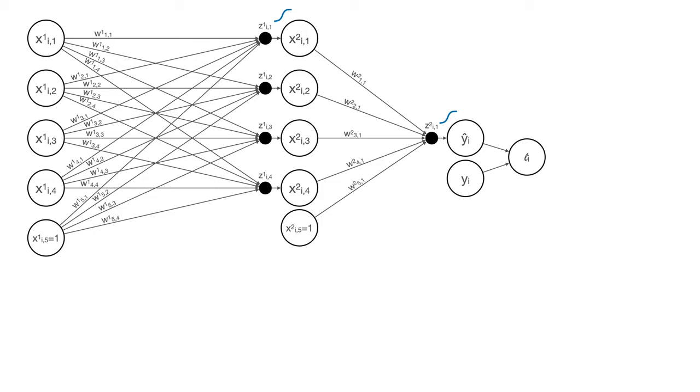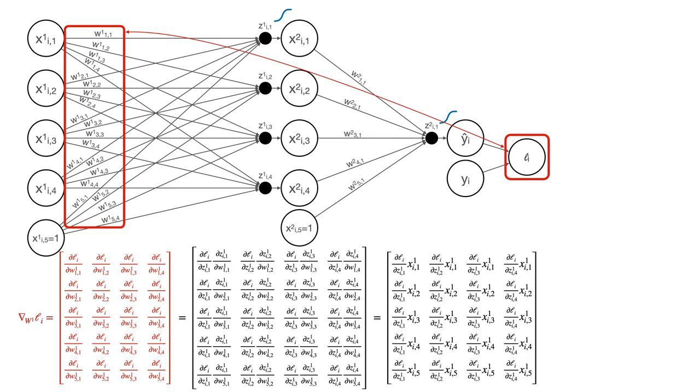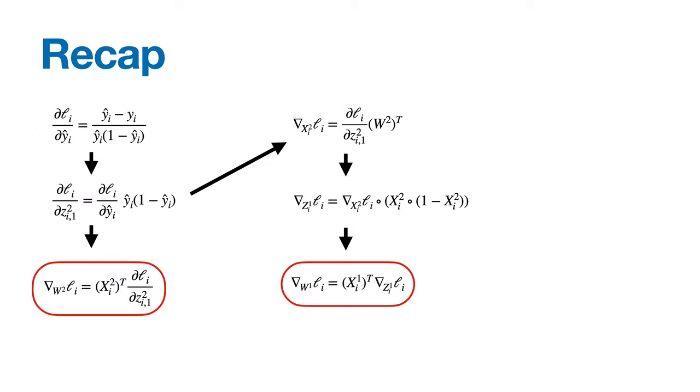Last but not least, we want to know the gradient of Li with respect to W1, which ultimately is going to be a big matrix like this. Going through the same sort of steps as before, we find that it's equal to X1i transpose times the gradient of Li with respect to Z1i. Recapping, here are the important derivatives we calculated. And you can kind of see with these arrows the order in which you'd calculate each of these terms. One thing I'll note is that there's a really nice simplification when you do this multiplication. So in practice, you'd probably skip the calculation of partial Li partial y hat i, and go straight to calculating partial Li partial Z2i1.